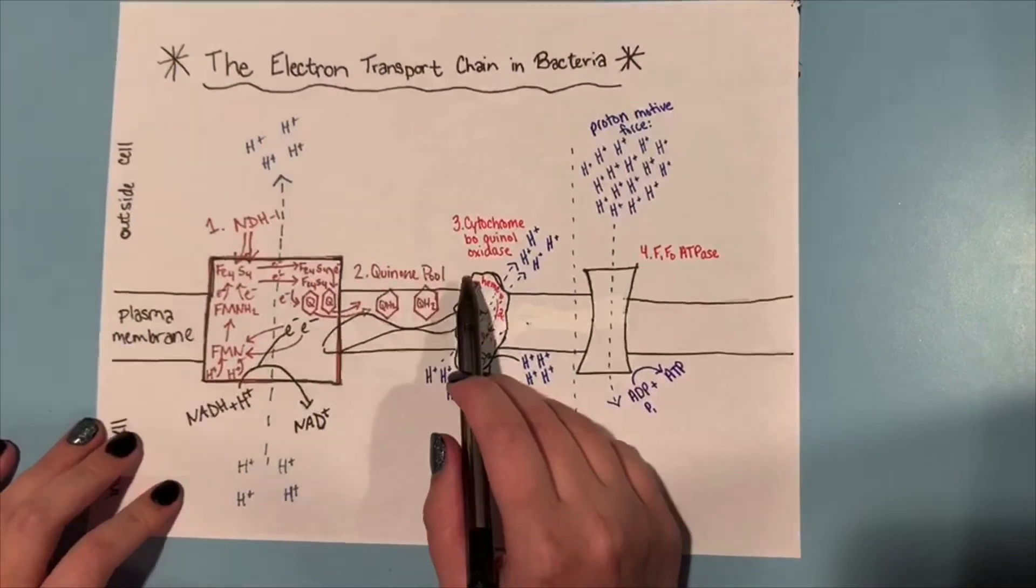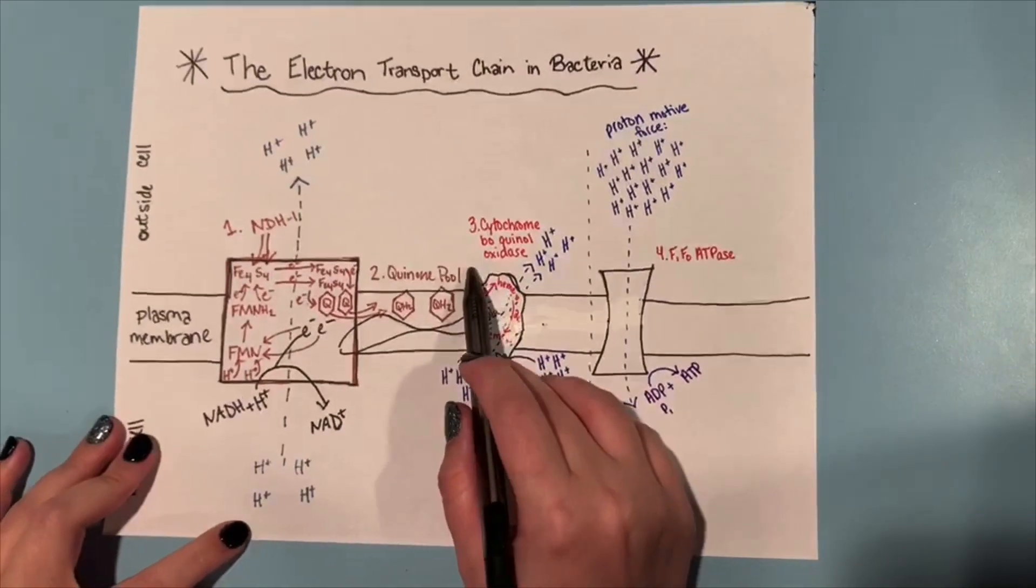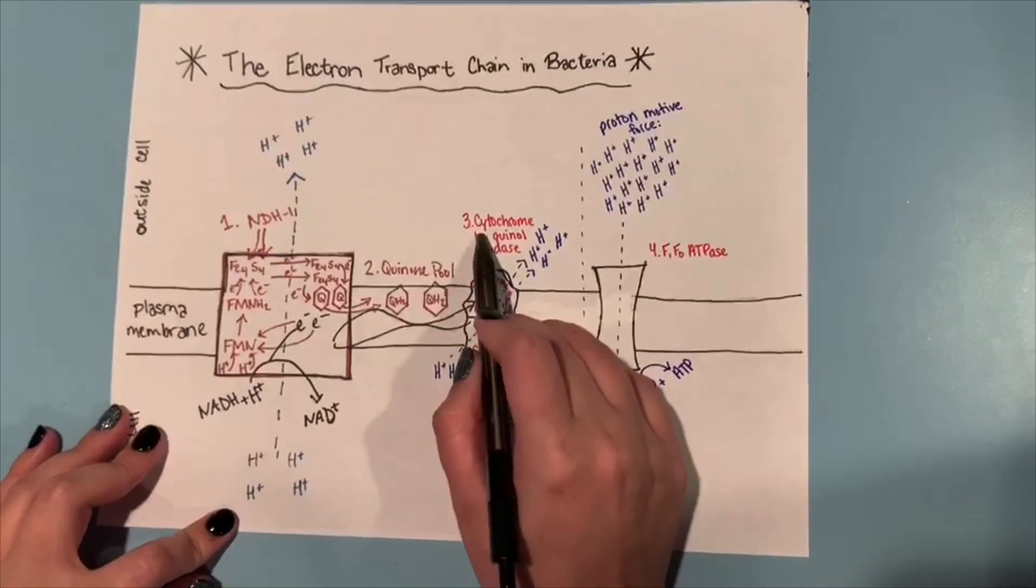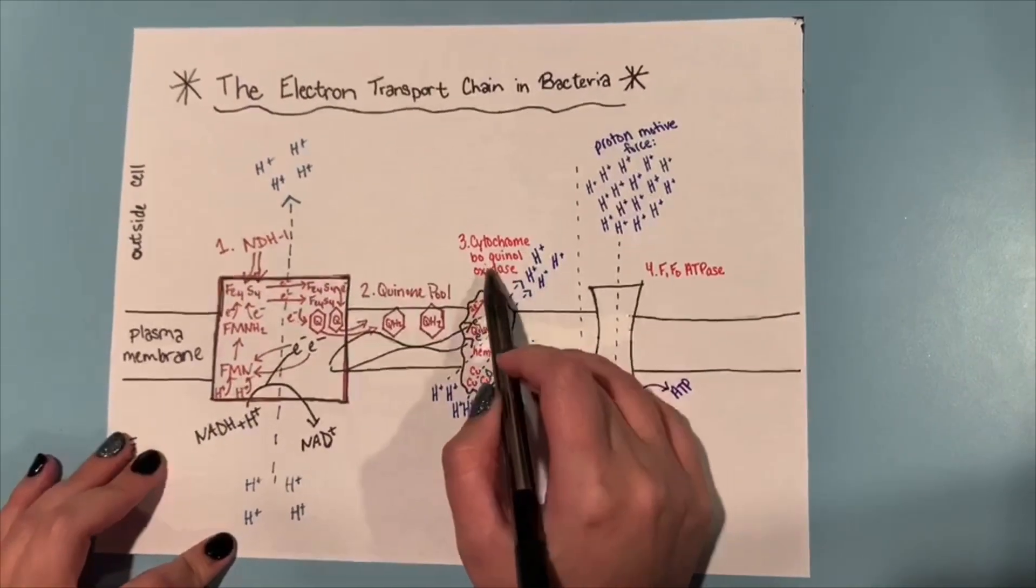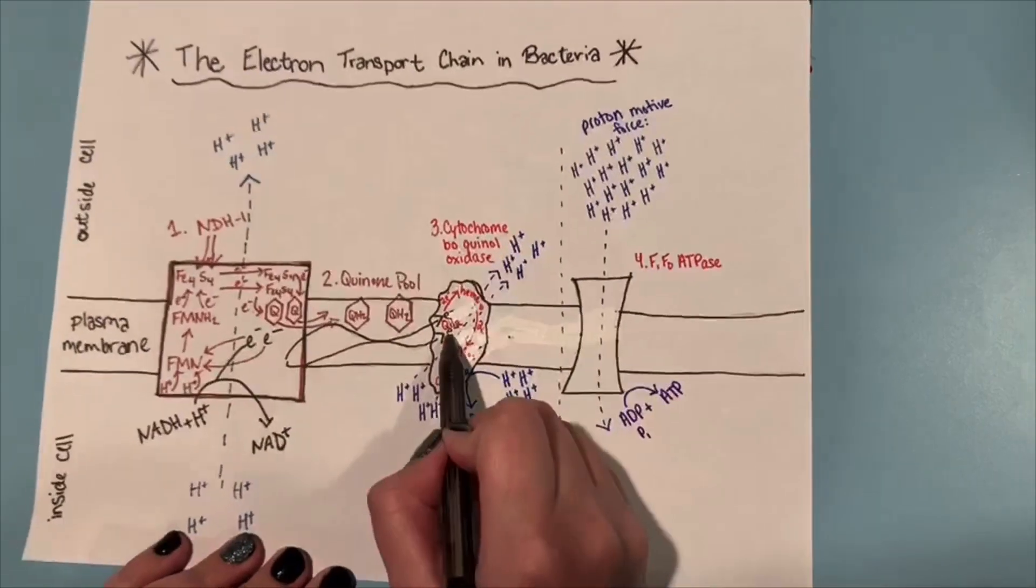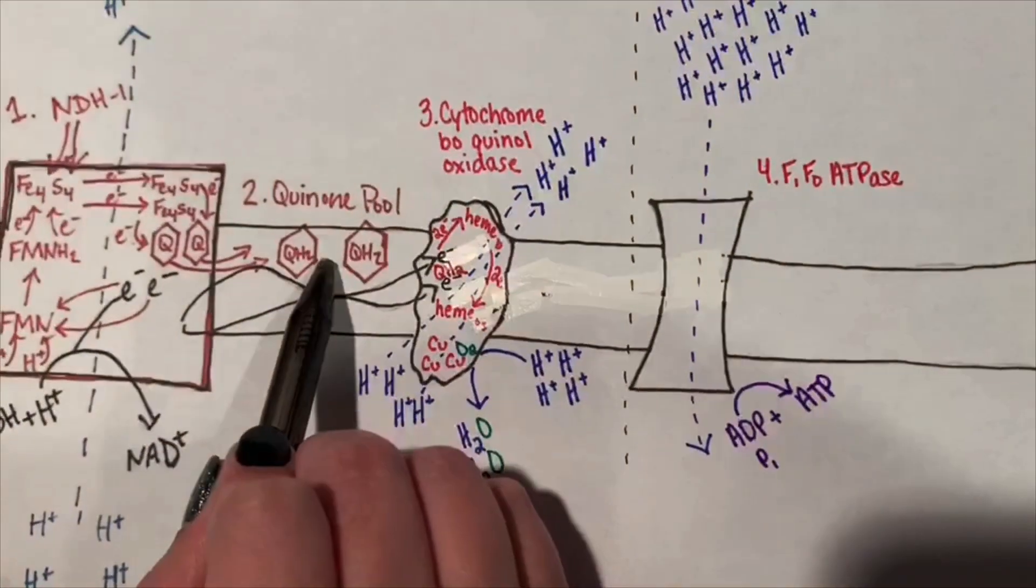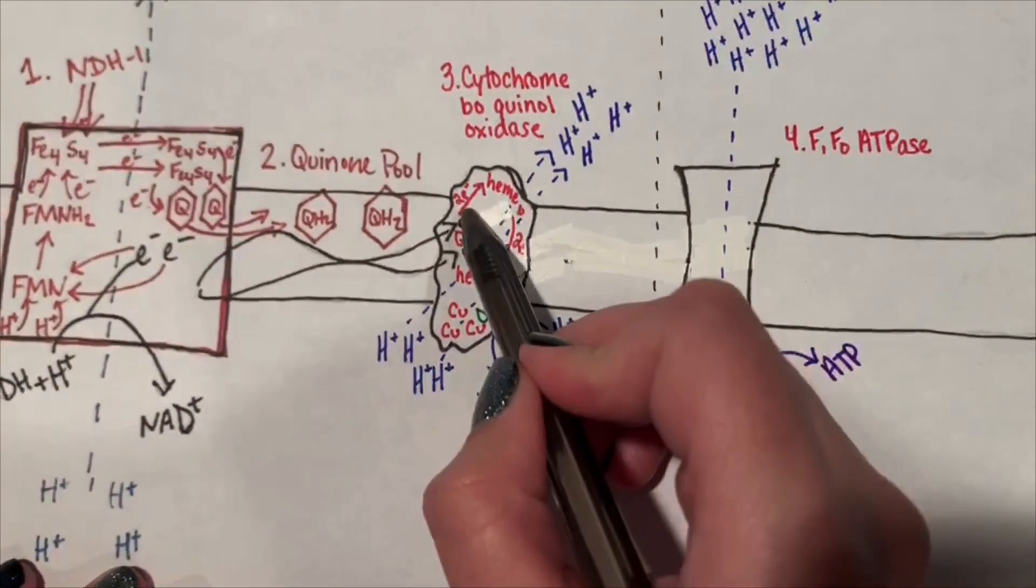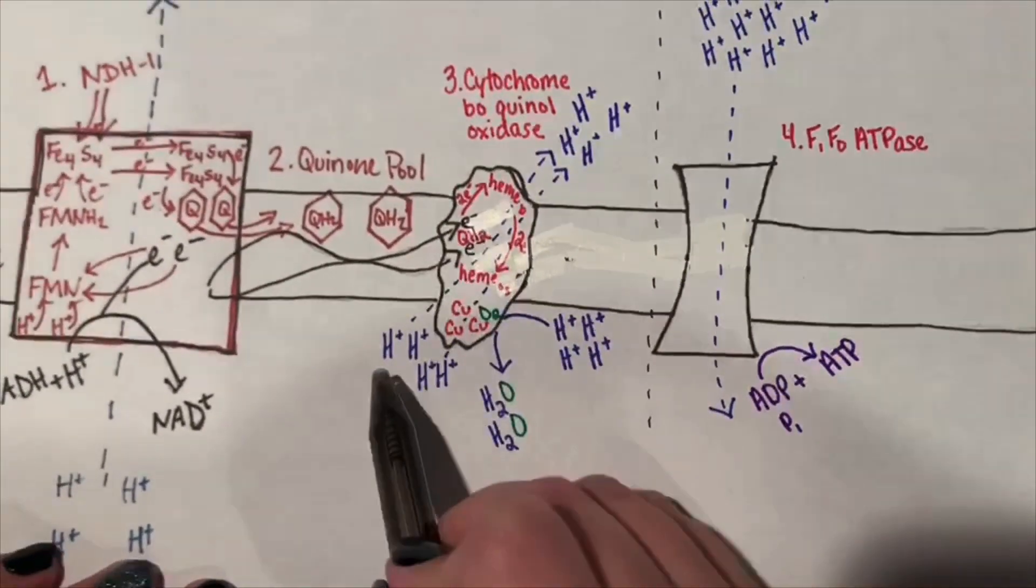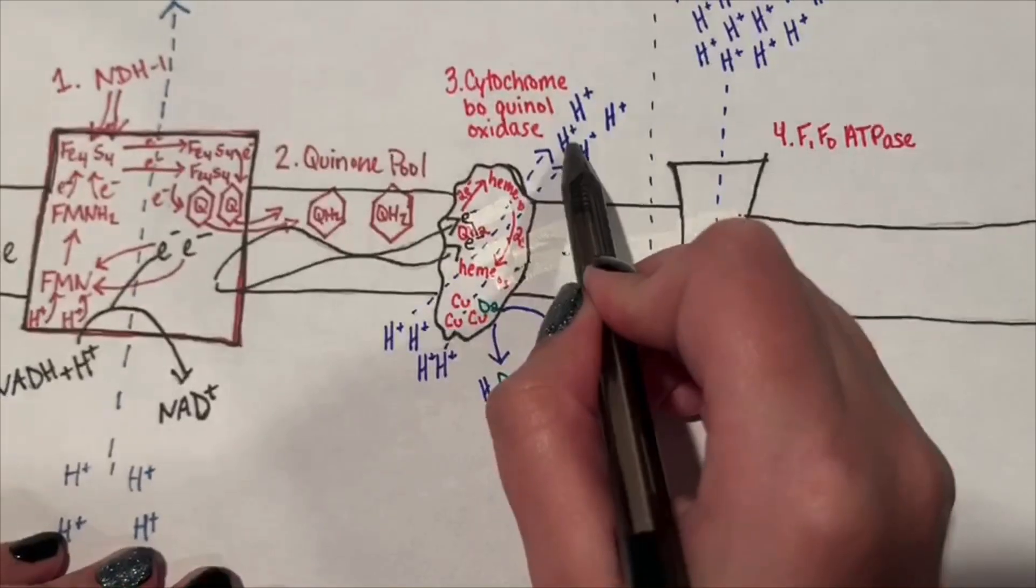The third step in the electron transport chain in bacteria is known as a terminal oxidase, otherwise known as cytochrome BO quinol oxidase. What this does is it takes a quinol molecule from the quinone pool in step two and donates two electrons to heme B. This process moves two hydrogens across the membrane.